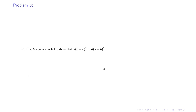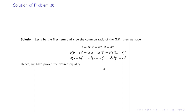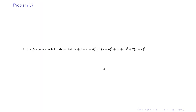Problem 36: if A, B, C, D are in GP, show that A(B-C)³ = D(A-B)³. Let A be the first term and R the common ratio, so B = AR, C = AR², D = AR³. The left-hand side is A·(AR - AR²)³ = A⁴R³(1-R)³. The right-hand side is AR³·(A - AR)³ = A⁴R³(1-R)³. Thus LHS = RHS.